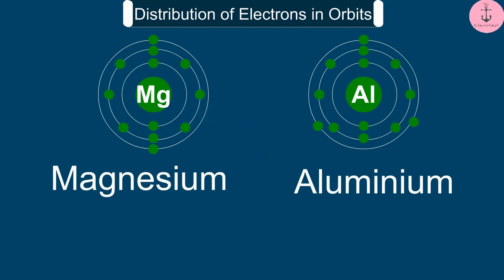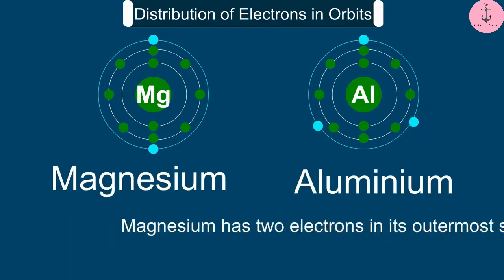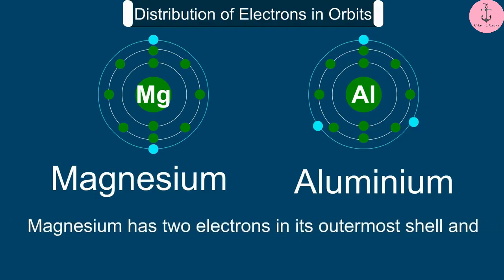Can you tell what is the valency of magnesium and aluminium? Absolutely correct! It is 2 and 3 respectively, because magnesium has 2 electrons in its outermost shell.